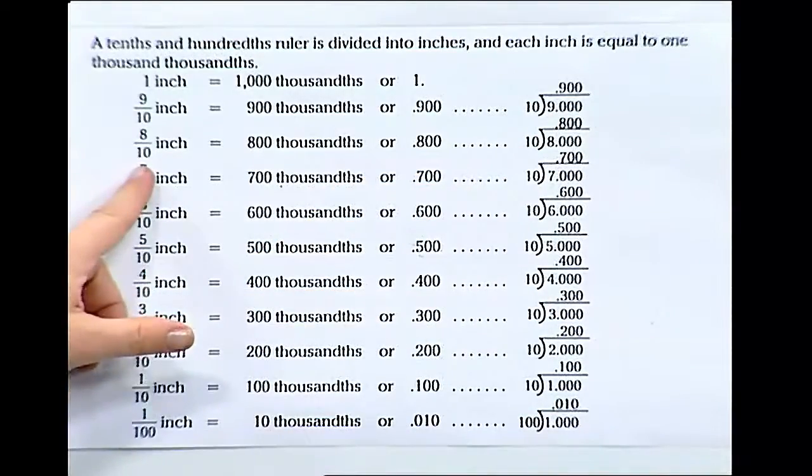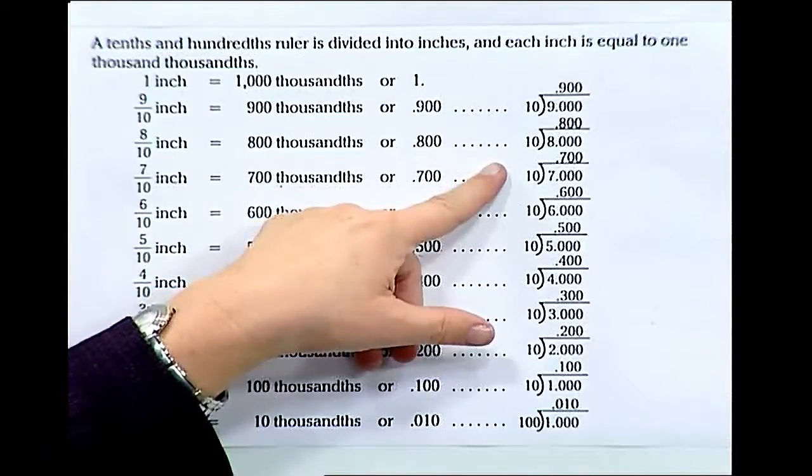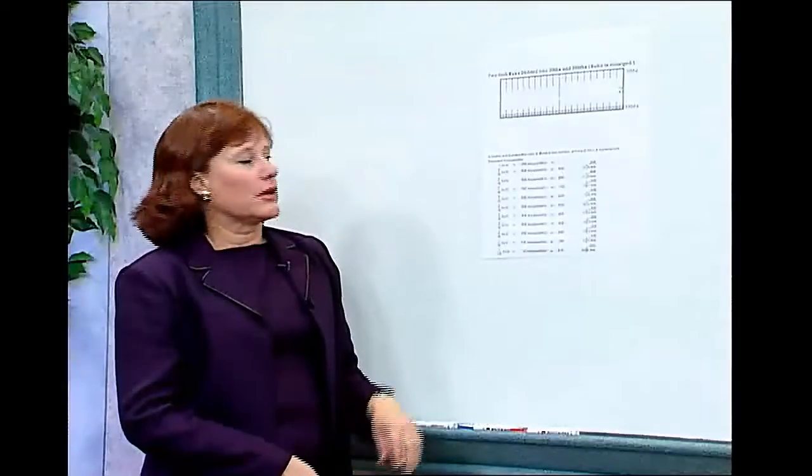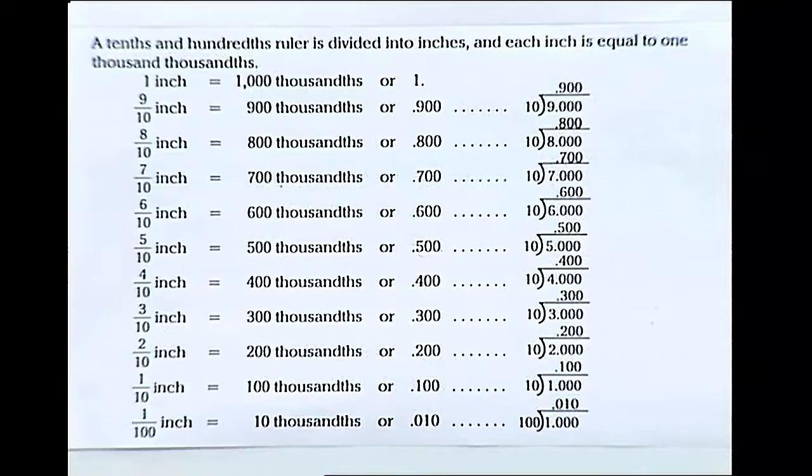If you need eight tenths of an inch, that's eight hundred thousandths. Dividing ten into eight gives you point eight zero zero or eight hundred thousandths. You can see there's a nice pattern following down here that makes it a little easier for the tool makers and machinists to remember.